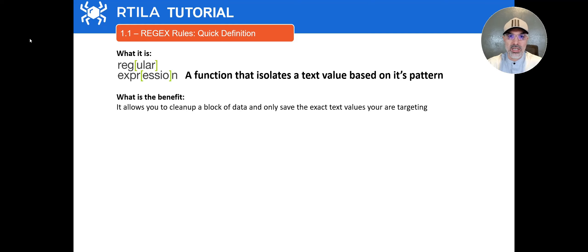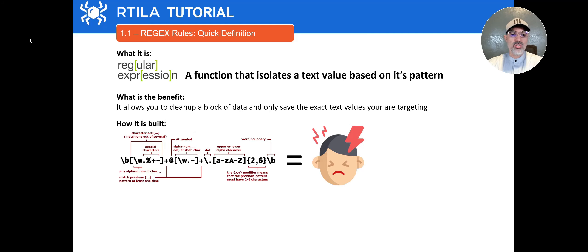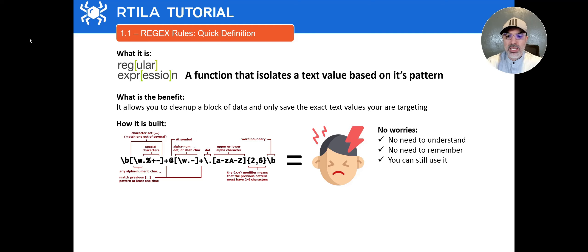The benefit of using such a rule is that it allows you to clean up a block of data. So let's say you scrape a whole block of data, but there is only one specific part that you want — it will help you isolate that part by looking at its specific pattern. Now, looking at how regex is built, I'm not even trying to understand what is going on here. It's straight away a pain in the head for most of us who are not developers. But don't worry, because we do not need to understand or remember this way of building a regex. You can still use it as a beginner, as a non-tech user.